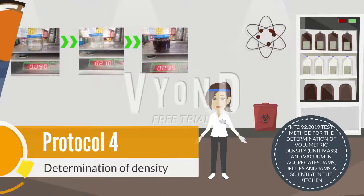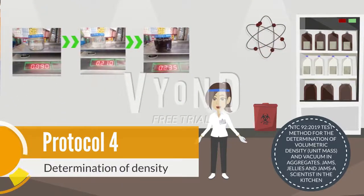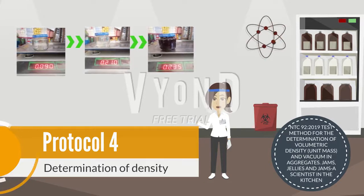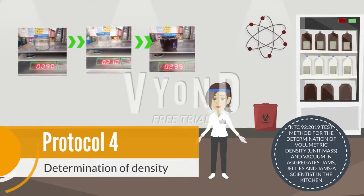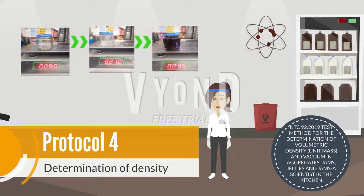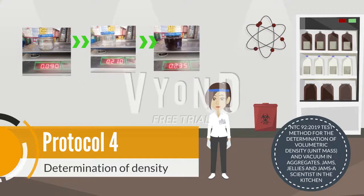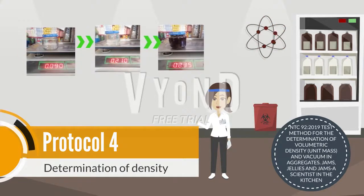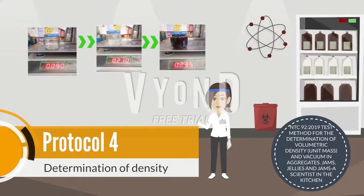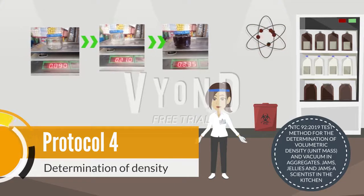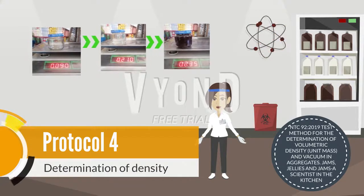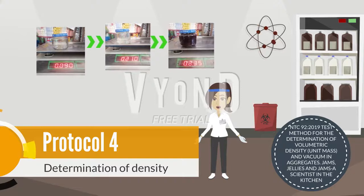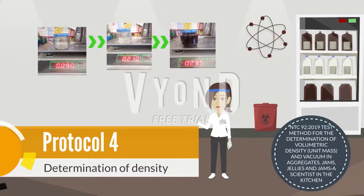Colorimetric density determination: density is the relationship between the mass and the volume of a substance. We are based on NTC 902-2019. This method is for the determination of volumetric density, and the result of the analysis was that the sample meets requirements.